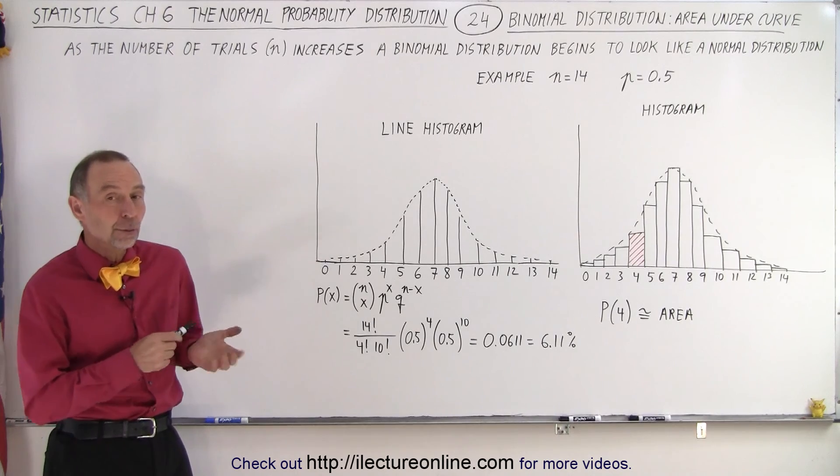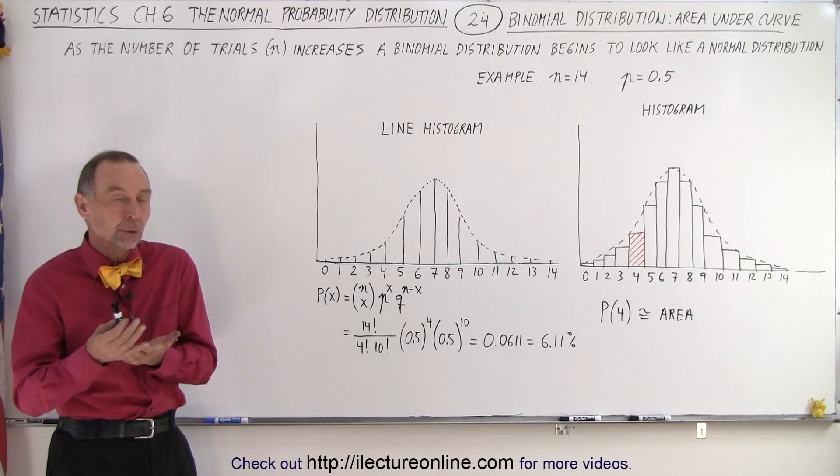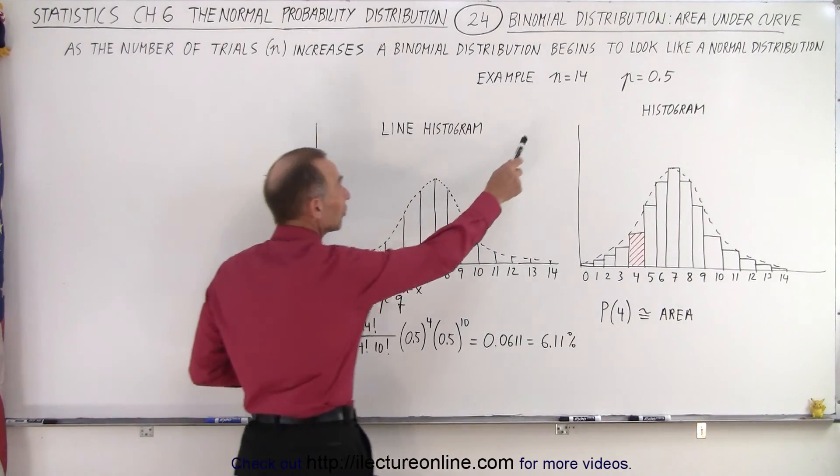In this video, we're going to calculate the probability of a particular outcome when we have n trials, n being 14, and a probability of success being 0.5.